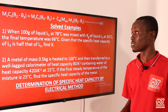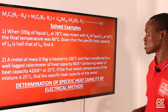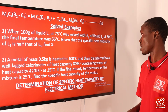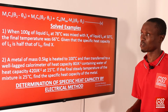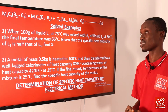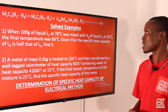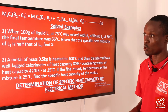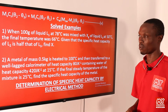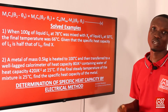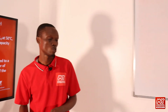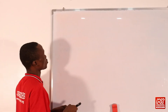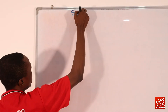Example one: 100 grams of liquid L1 at 78°C was mixed with s grams of liquid L2 at 50°C. The final temperature was 66°C. Given that the specific heat capacity of L2 is half that of L1, find s.